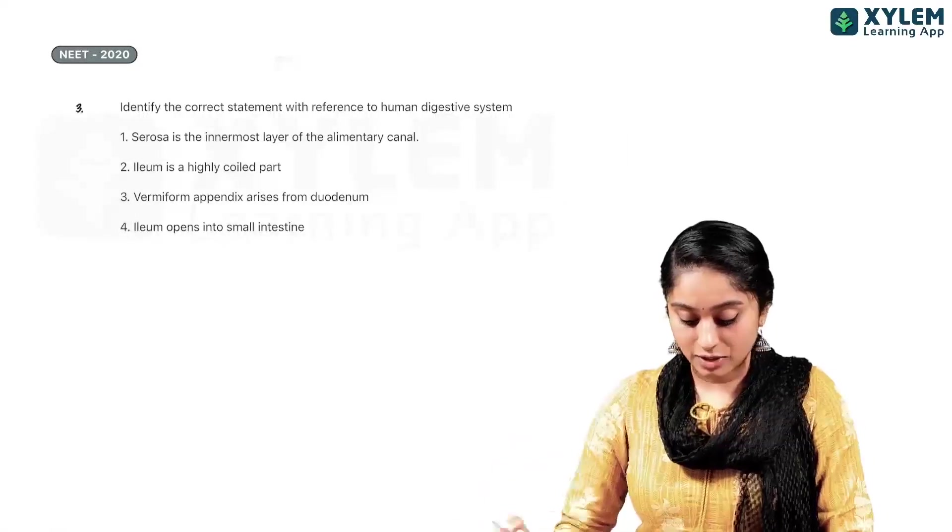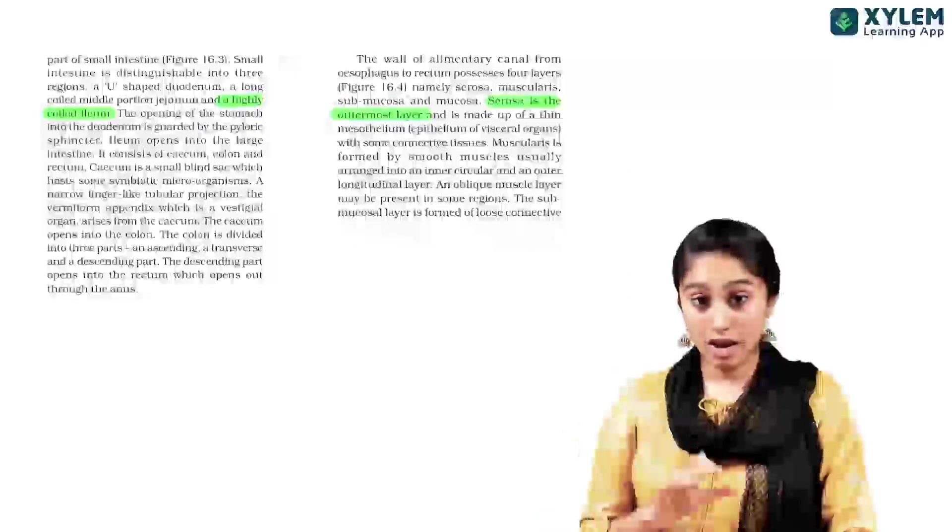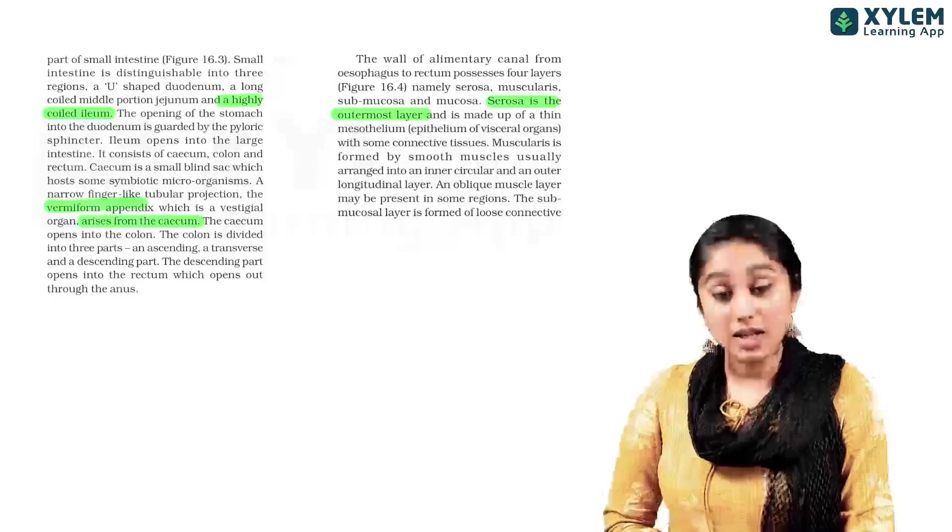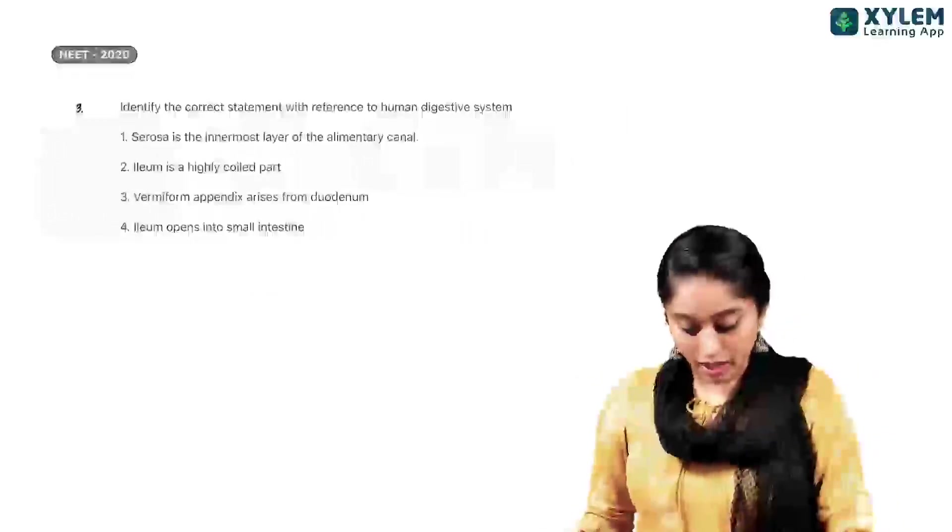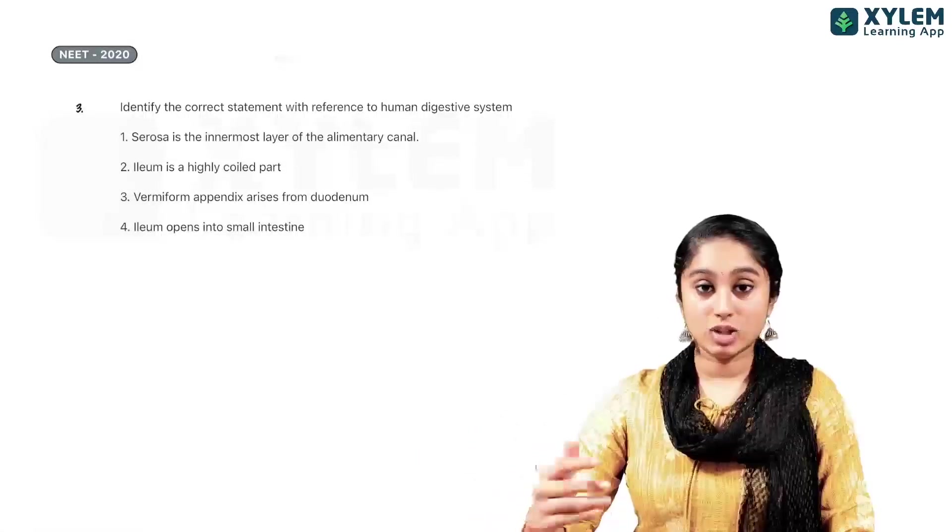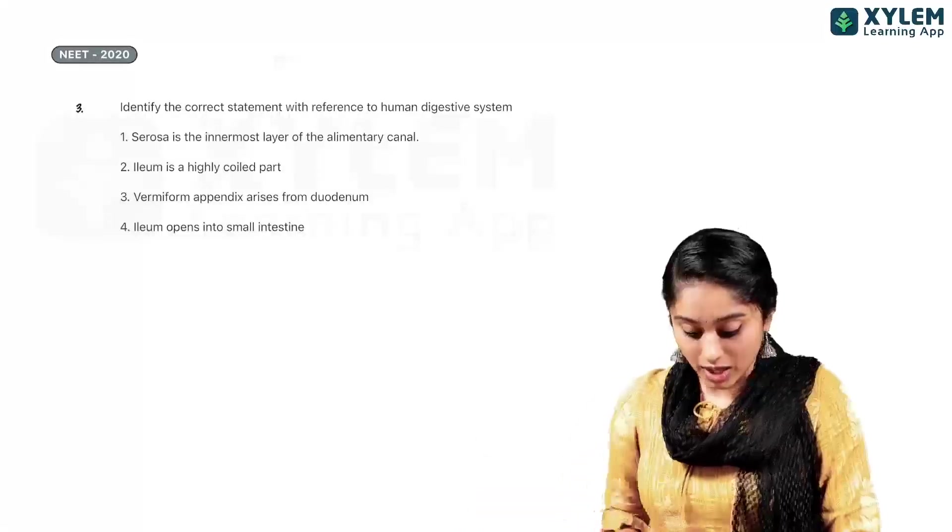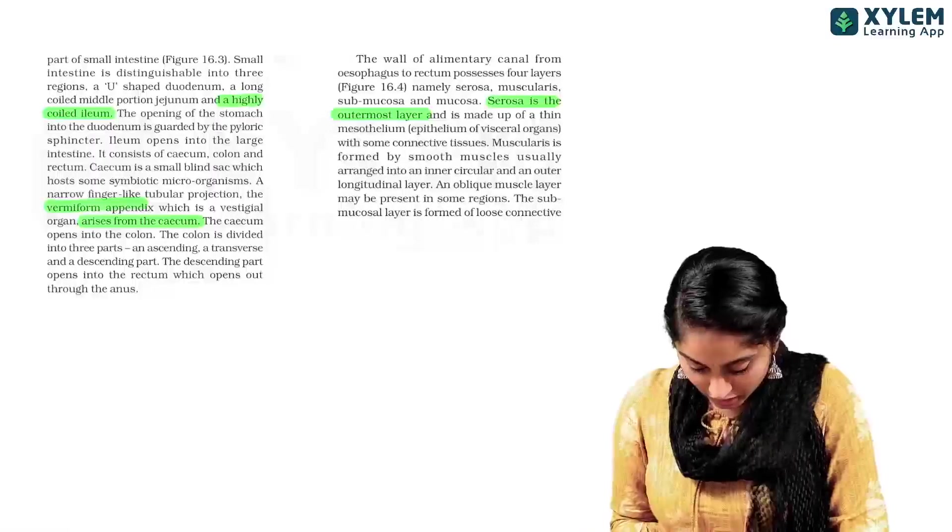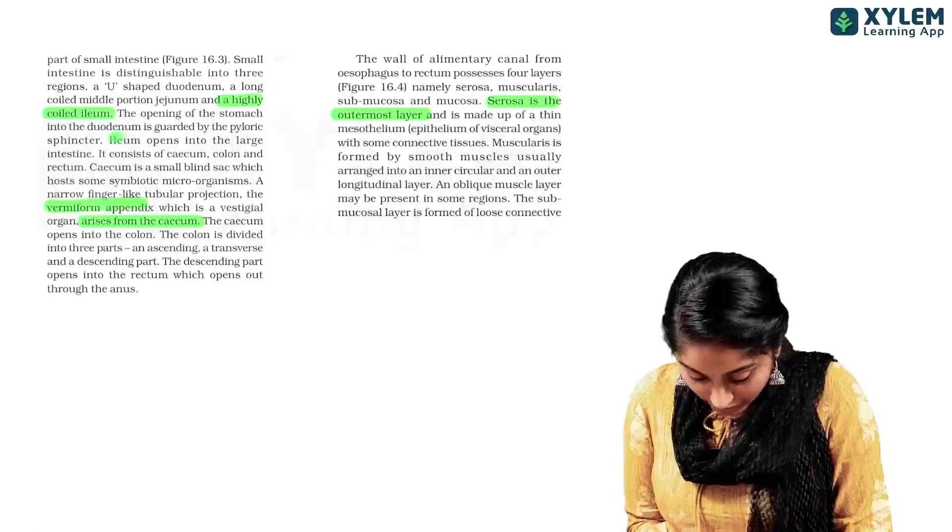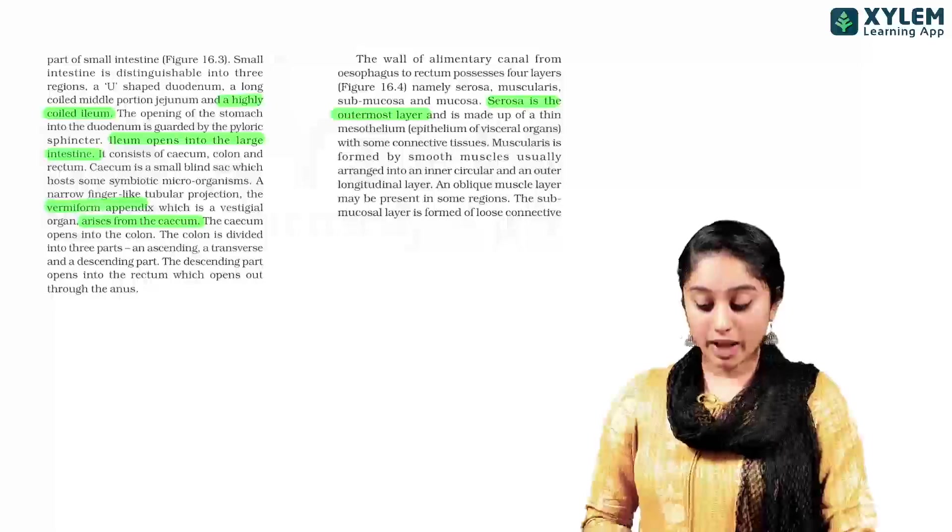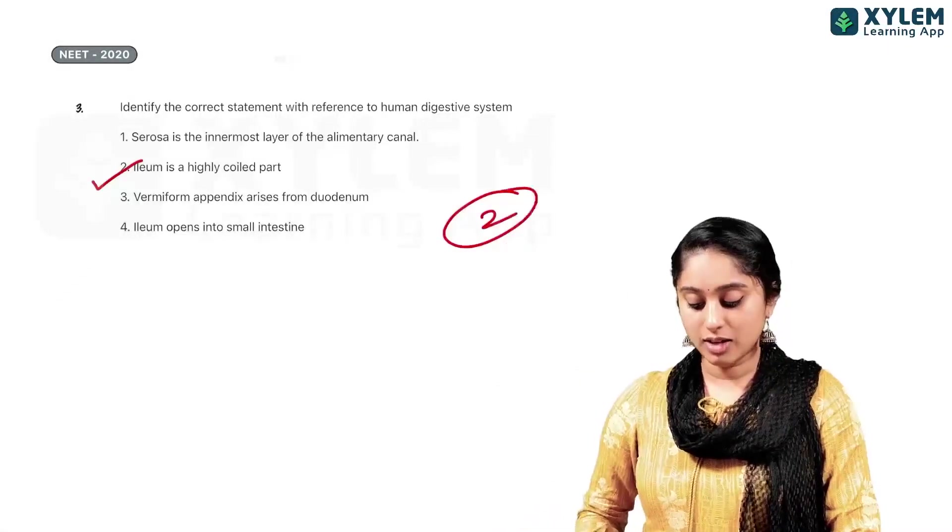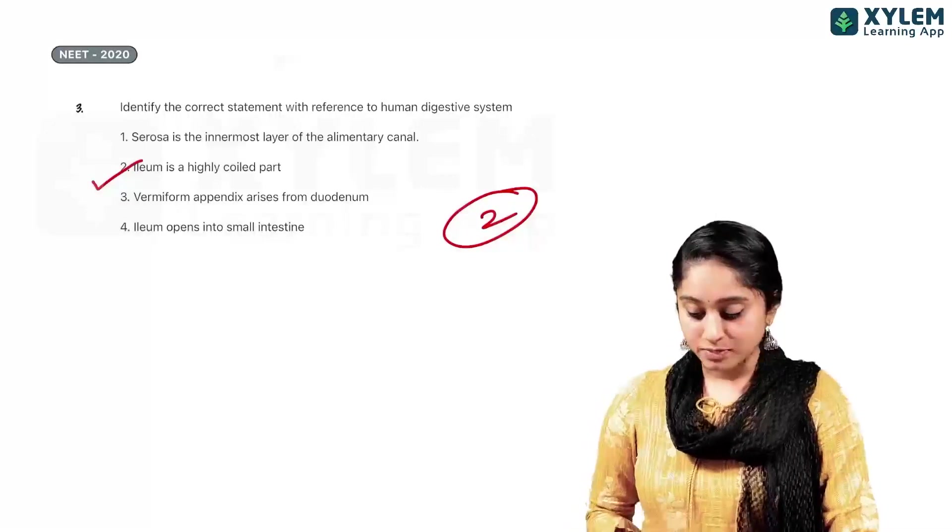Vermiform appendix arises from the duodenum. Now, duodenum is part of the small intestine. Vermiform appendix is connected to the large intestine. So, it arises from the cecum. Then, we have Ileum opens into small intestine. Again, Ileum is a part of the small intestine. So, it will open into the large intestine. So, we clearly know that Ileum is a highly coiled part. That is the correct answer.